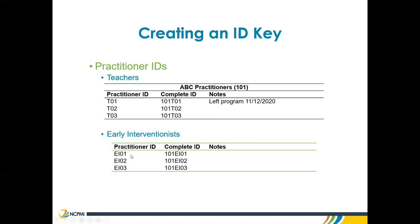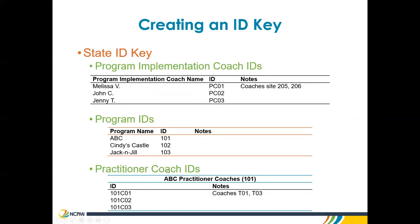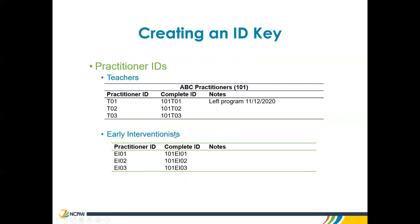One thing to point out is that in the state ID key, there are no names for practitioner or practitioner coach IDs. That is because data is aggregated across individuals by unique identifier, and it's unlikely that you as a state data coordinator will need to identify individuals by name. As long as programs have followed the guidance on how to assign IDs, the state data coordinator should be able to aggregate data. Programs should provide the state data coordinator with a list of IDs with no names — just showing their practitioner coach IDs and practitioners — so the coordinator knows what data to expect.